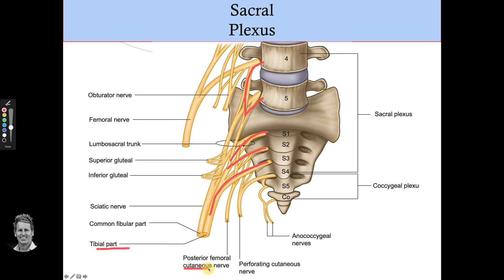The posterior femoral cutaneous nerve is essentially the posterior part of the thigh — like the lateral femoral at the back — and comes from S1 to S3. There's also the pudendal nerve, which comes from S2 to S4, and we'll talk about that shortly.